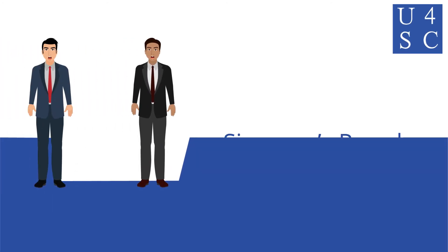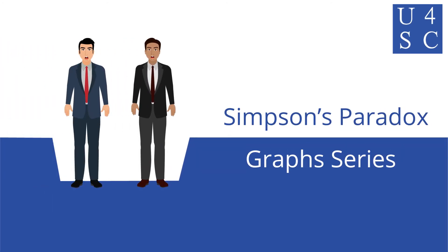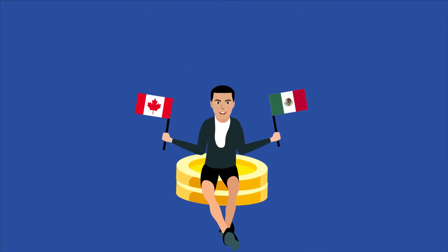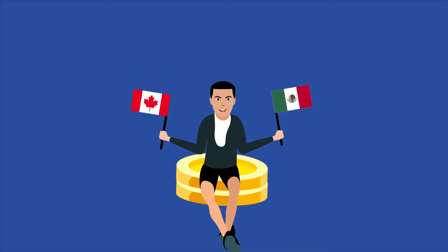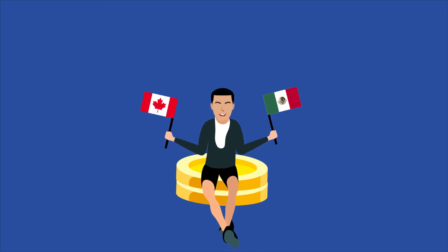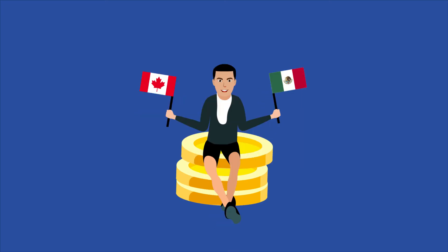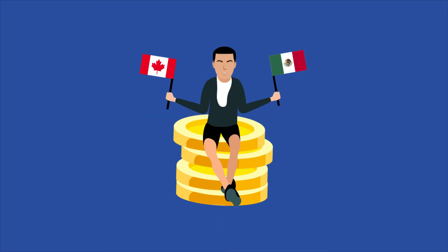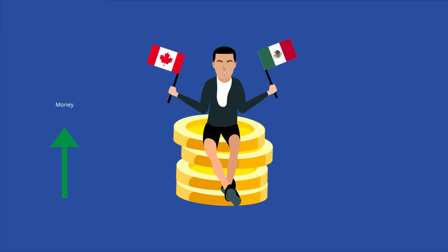Academy for Social Change presents Simpson's Paradox. As the old saying goes, money doesn't buy happiness. For the sake of this example, let's say that researchers in both Canada and Mexico independently collect data to test that saying. Each group found that their citizens' happiness ratings decrease uniformly as income increases.